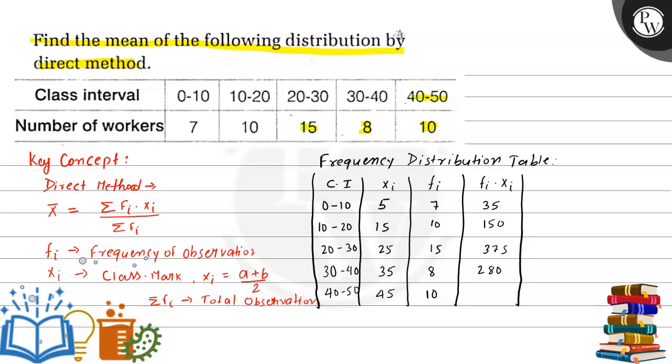So now we will find the summation of fi times xi. So if we add all these terms, we will get 1290. And summation of fi will be equal to 50.